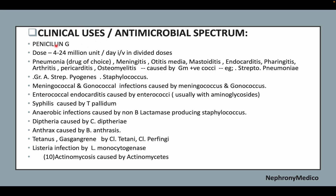Clinical uses of penicillin G include pneumonia (drug of choice), meningitis, otitis media, mastoiditis, endocarditis, pharyngitis, arthritis, pericarditis, and osteomyelitis. It is used for Group A Streptococcus pyogenes and streptococcal infections, meningococcal and gonococcal infections, enterococcal infections, syphilis, anaerobic infections, diphtheria, anthrax, tetanus, gas gangrene, listeria infections, and actinomycosis.